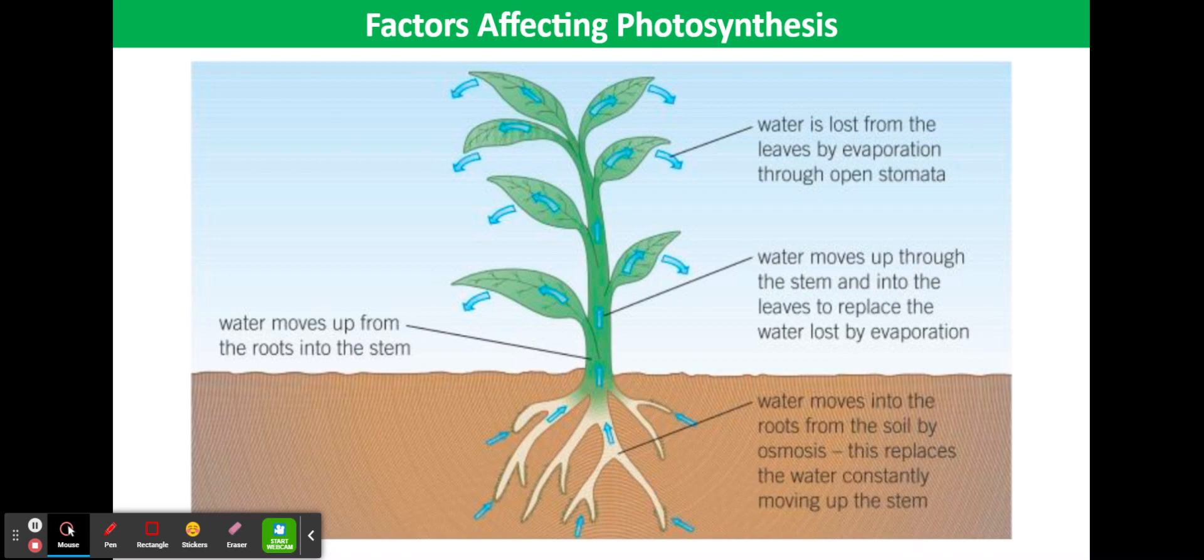causes stomata to close, reducing gas exchange. The tissues become flaccid and the leaves wilt, and the rate of photosynthesis greatly reduces.